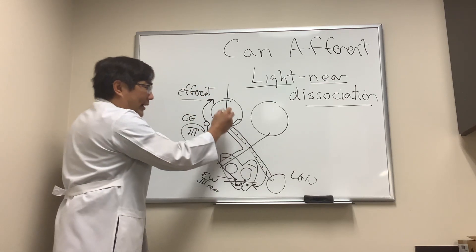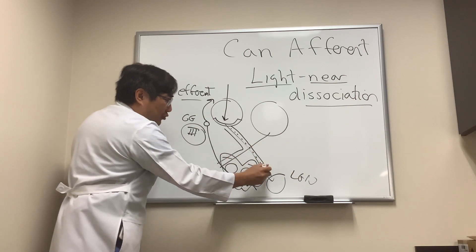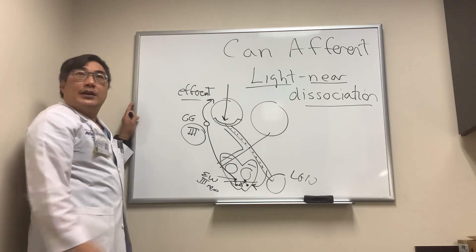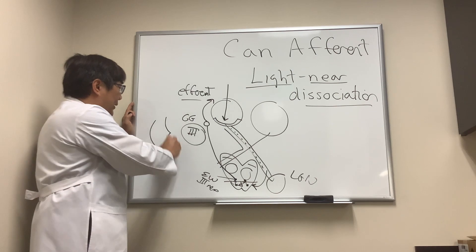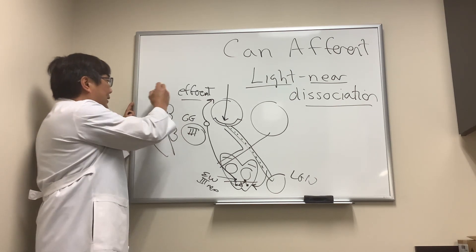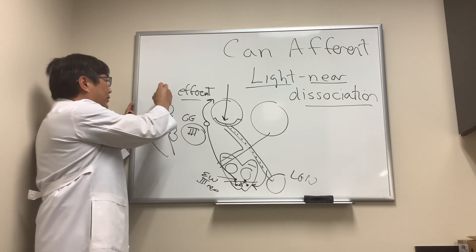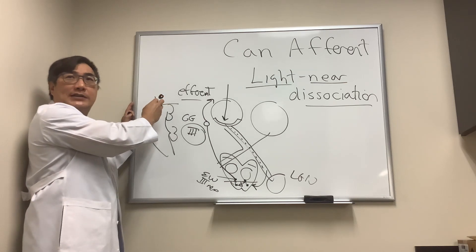And the afferent pathway is retina, optic nerve, chiasm, tract, pre-tectal nuclei. And so the near pathway lives somewhere up here in the rostral thalamic mesencephalic junction.